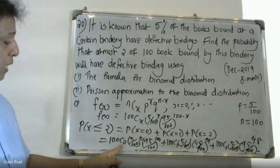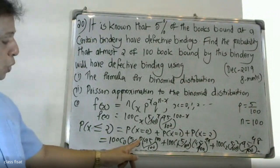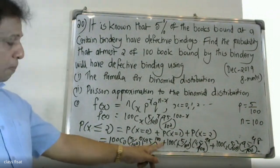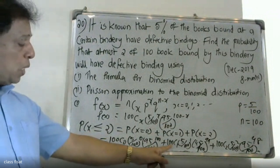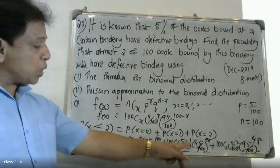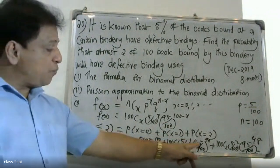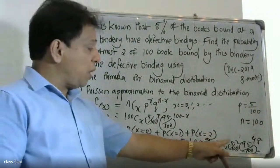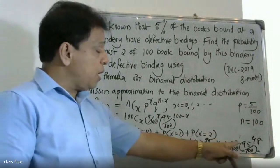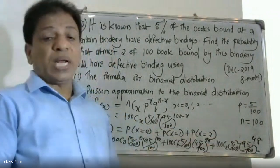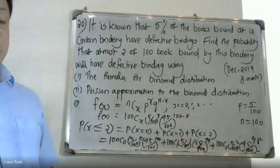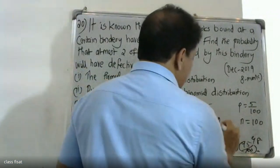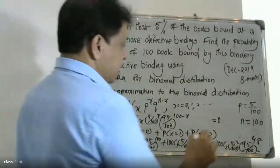So P(X = 0): 100 C 0 times (5/100) raised to 0 times (95/100) raised to 100. Plus P(X = 1): 100 C 1 times (5/100) raised to 1 times (95/100) raised to 99. Plus P(X = 2): 100 C 2 times (5/100) squared times (95/100) raised to 98. Calculating this answer gives 0.117.